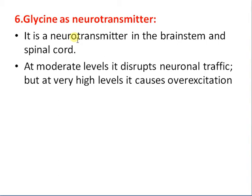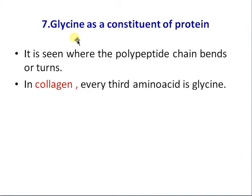Glycine is a neurotransmitter and neuromodulator, functioning majorly in the brainstem and spinal cord. At moderate levels it disrupts neuronal traffic, but at very high levels it causes overexcitation. As a constituent of proteins, glycine is found in collagen, where every third amino acid is glycine.